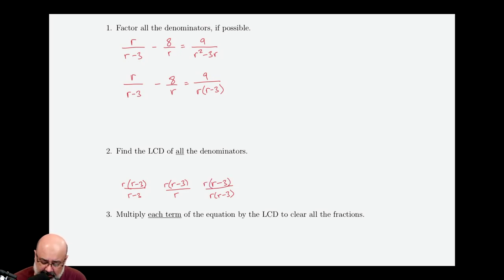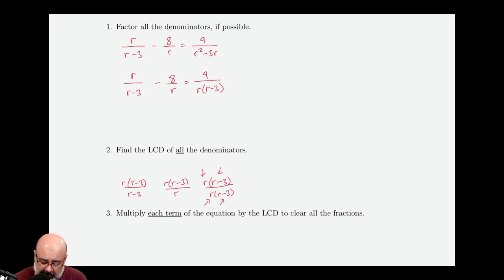So now we look at the last term. How do we cancel this r with this r? How do we cancel this r minus three with this r minus three? So the LCD, the least common denominator that cancels out each of these denominators will be r times r minus three.